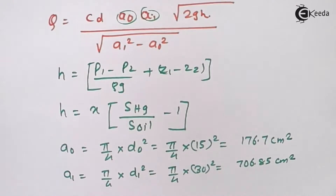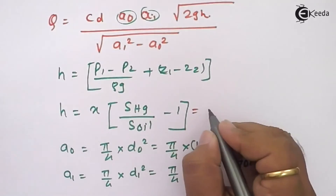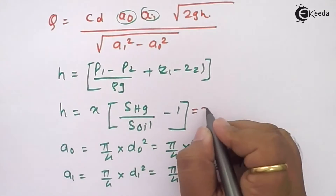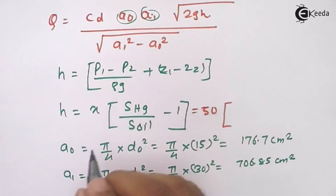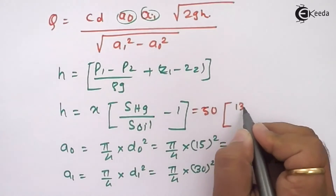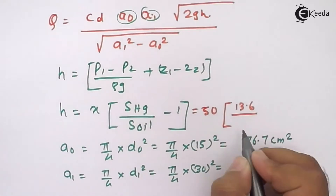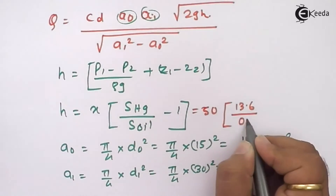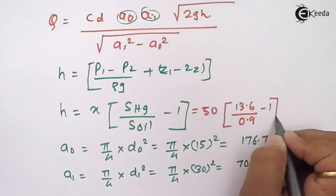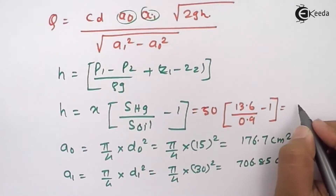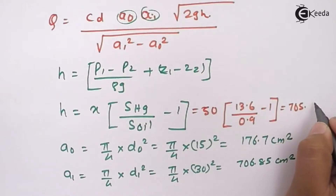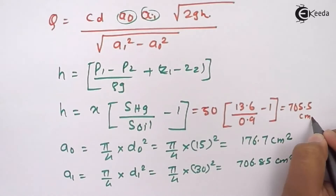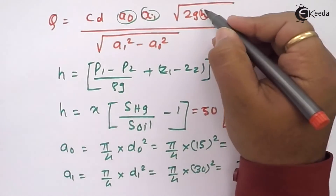Now let us calculate the value of H. H equals x, that is 50 centimeters, into S of mercury (13.6) divided by S of oil (0.9), minus 1. This comes out to be 705.5 centimeters. So we have calculated all the values we need.